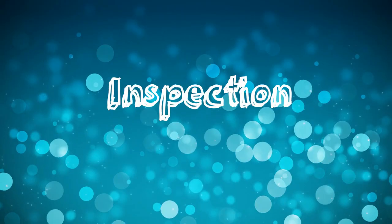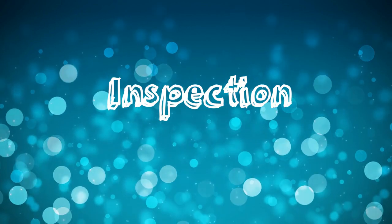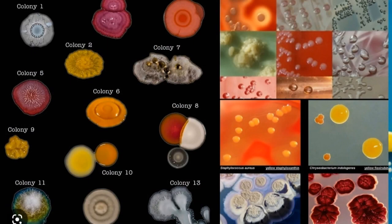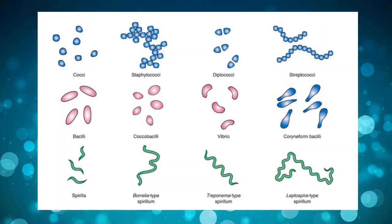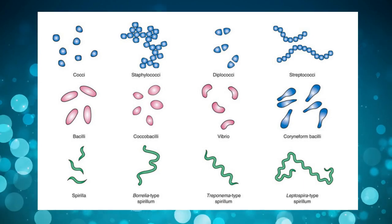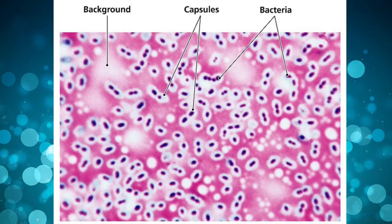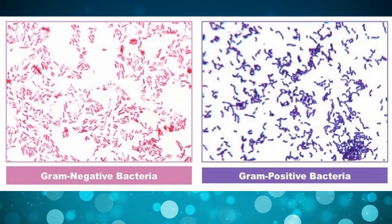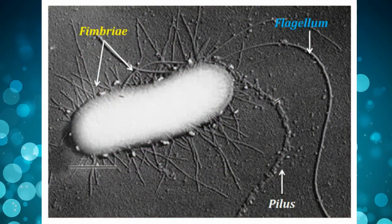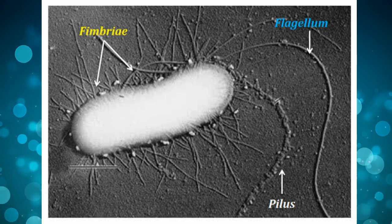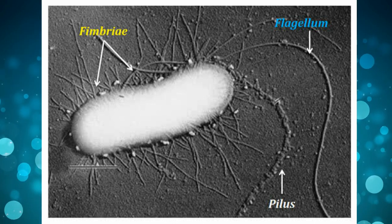Once we have isolated the pathogen in pure culture, we go for inspection, done first with the naked eye for the texture, size, shape, pigment, speed of growth, and patterns of growth produced on different culture media. Then we inspect the pathogen under the microscope, looking at the bacteria's shape, size, motility, capsule formation, sporulation, granules, and uptake of color on gram staining and other stains. We can use various types of microscopes for identifying details of cell wall, flagella, pili, and even fimbriae.